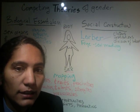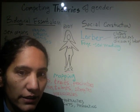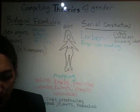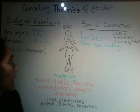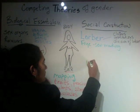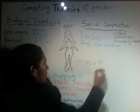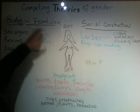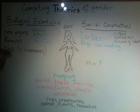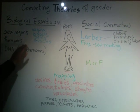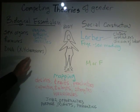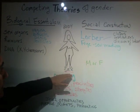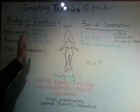The biologically essentialist theory argues that our notions of male or female are actually a product of sex organs, hormones, and DNA. In other words, the body itself — the biological sex of the body — is what determines the gender.